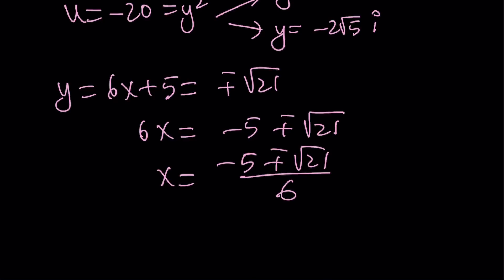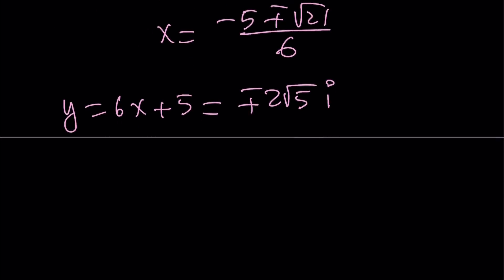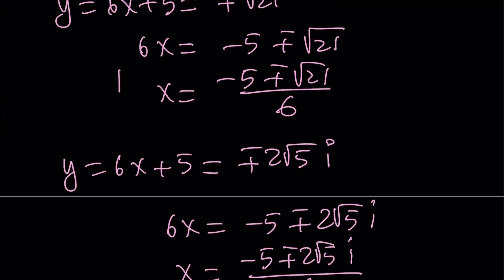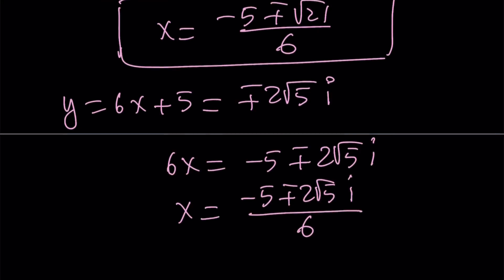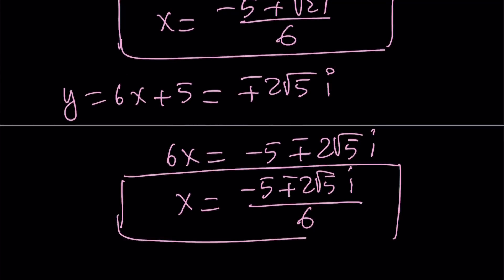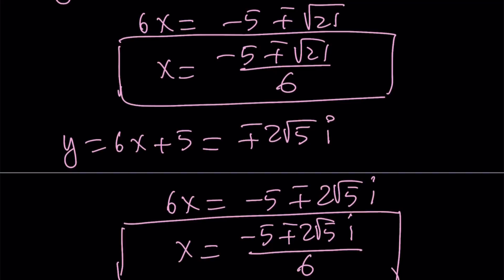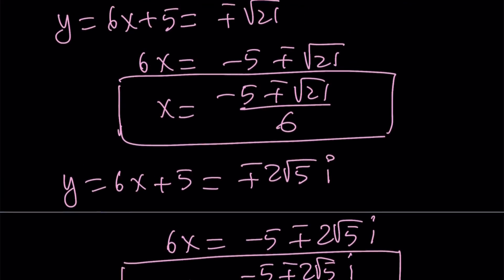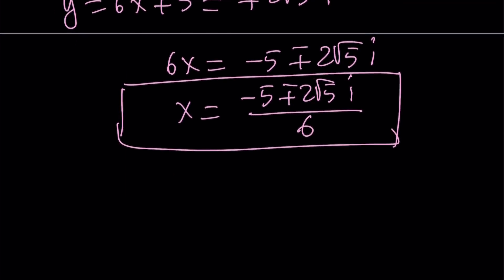And then for the second one, we're going to get y equals 6x plus 5, and that is equal to plus minus 2 root 5i. And from here, if you subtract 5, you get negative 5 plus minus 2 root 5i, and x becomes negative 5 plus minus 2 root 5i divided by 6. So we're going to get two real solutions and two complex solutions to this equation. And why? Because this is a quartic and quartics have four solutions. Some of them can be real, some of them can be complex.